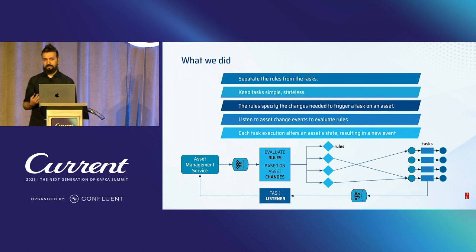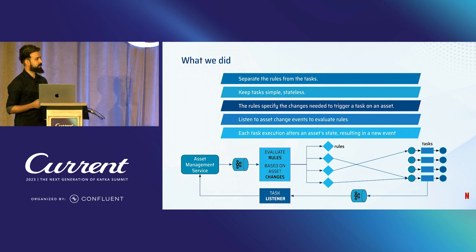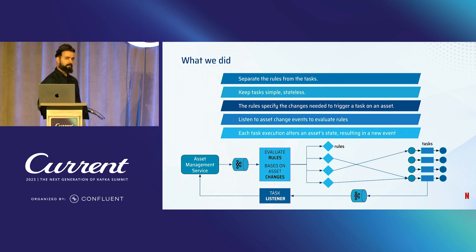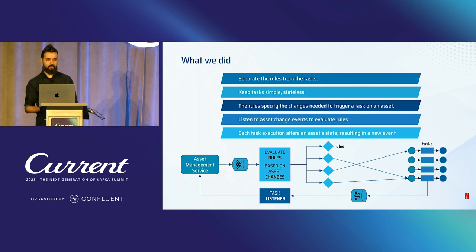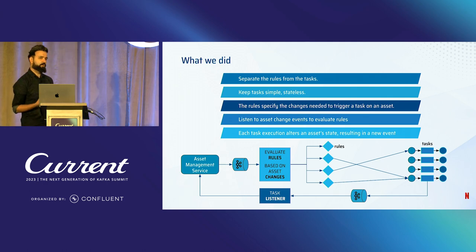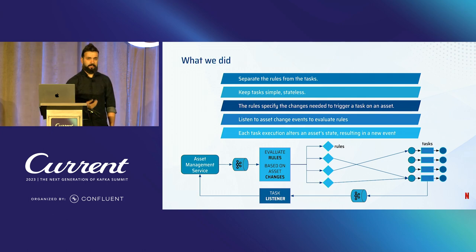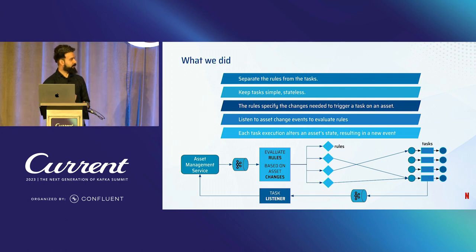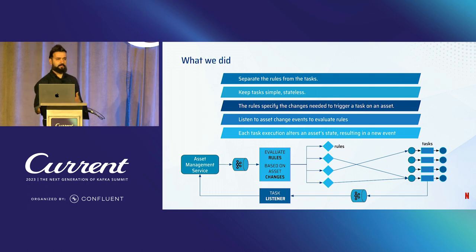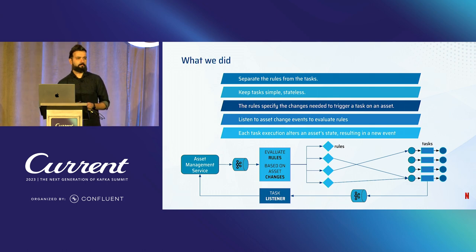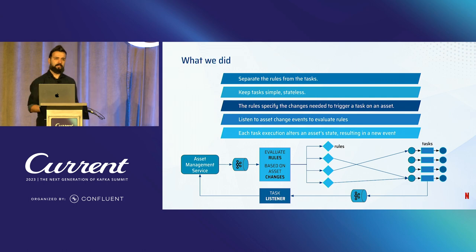Once tasks are completed, we send out another event to Kafka, which we listen to in order to see if the task succeeded or failed. We update the assets accordingly, which in turn creates a new event because the asset has just changed. This allows for task chaining and other patterns.